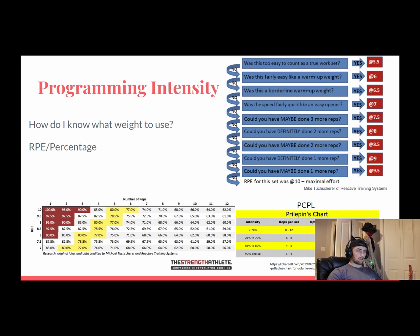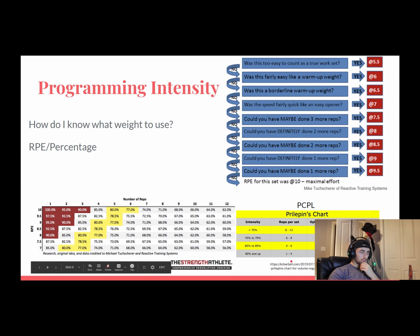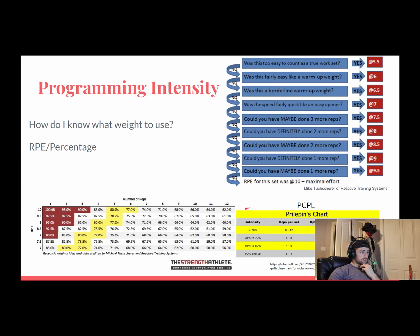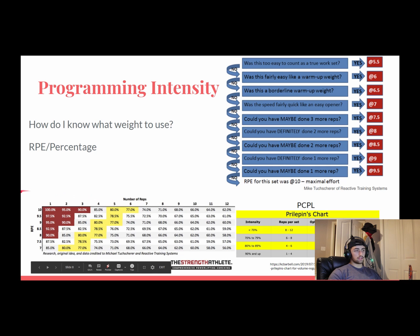This is also a great chart if you prefer percentage-based training, which is what I prefer. You can say, 'I want to hit something heavy for a triple near my peak at RPEs of eight to nine.' So you start with a set of three at RPE 8 — around 90% — then go to RPE 9 the next week. It's a very good way to break down your training and help you implement the right intensities.